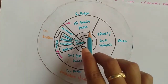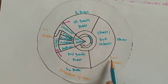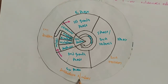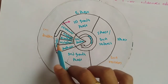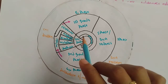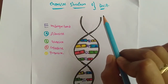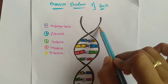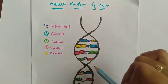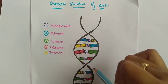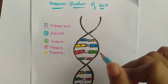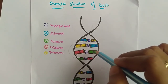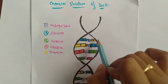The cell cycle structure: G1 phase is the first growth phase; S phase is where DNA synthesis and replication occur; G2 phase is preparation for mitosis; followed by cell division through prophase, metaphase, anaphase, telophase, and cytokinesis to form new daughter cells. DNA, or deoxyribonucleic acid, is a molecule composed of two polynucleotide chains that coil around each other to form a double helix, carrying genetic material for growth and reproduction.